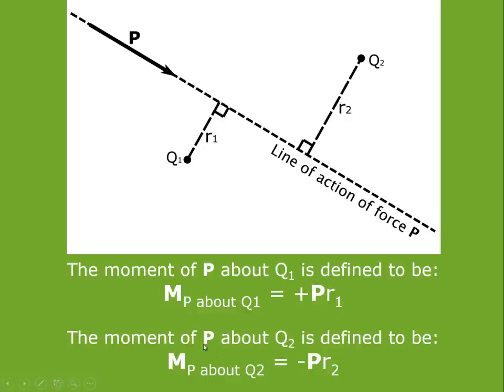Similarly, the moment of the force P about Q2 is defined to be M sub P about Q2 equals minus P times R2, where P is the magnitude of the force, R2 again is the perpendicular distance. So P times R2 is inherently a positive quantity because both the quantities involved are magnitudes, and the minus sign means it has a tendency to produce a counterclockwise rotation about point Q2. So P tended to produce clockwise rotation about Q1, counterclockwise rotation about Q2. So we had a plus sign for the moment of P about Q1 and a minus sign for the moment of P about Q2.